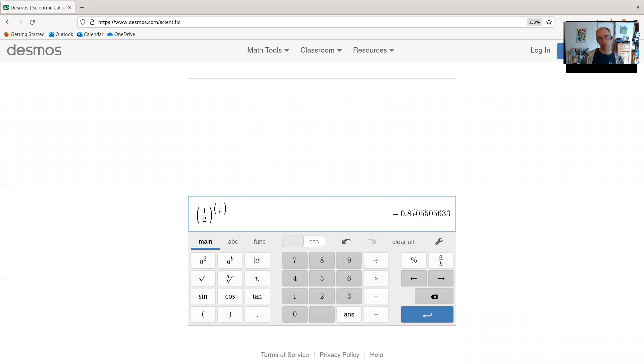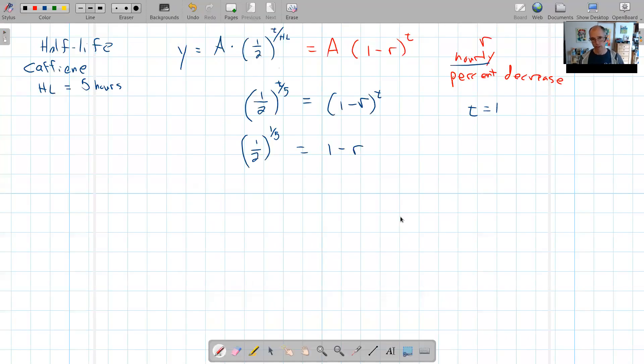I'm just going to go with the 0.87 part. Some problems you might need more decimals of accuracy. So I calculated that one-half to the one-fifth is about 0.87. And when I look at this right here, 0.87 equals one minus something, I can pretty much see what I would subtract from one to get 0.87, and I'm just going to guess that R is 0.13.